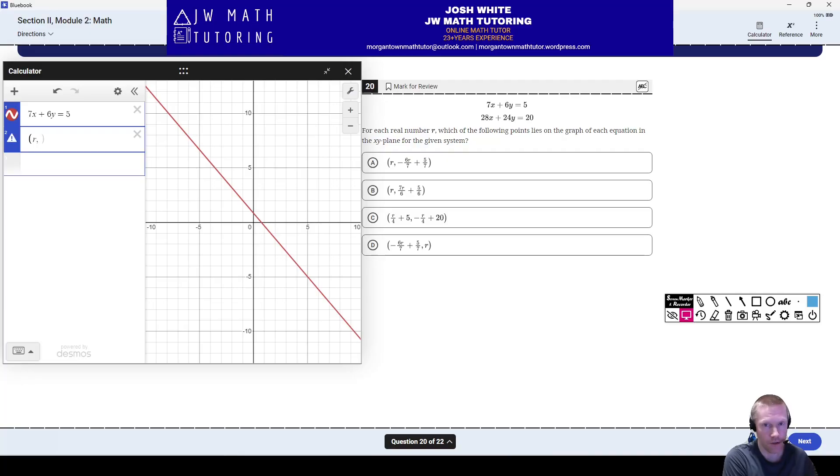All right. So now all I'm going to do is I'm going to type in my points. And then I'm going to put a slider for R. Also going to label the points. So notice, when I move the slider, does this one, is this one always on the line? No, it is not. Therefore, it will not be the correct answer.